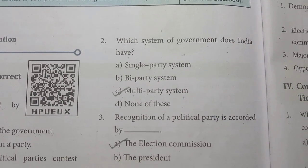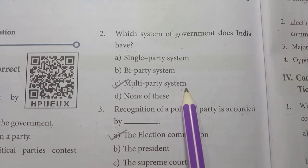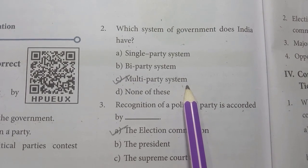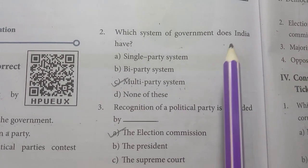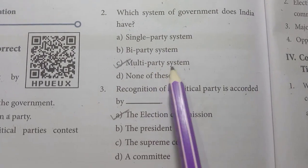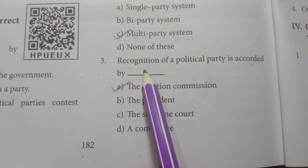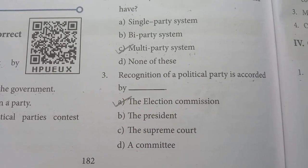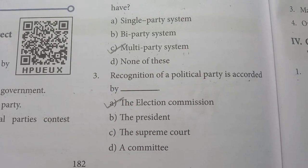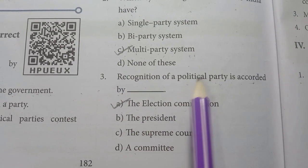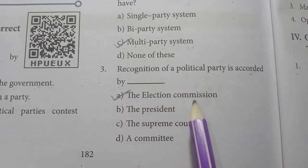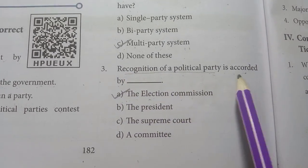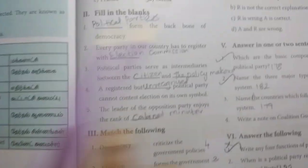Question 3: Multi-party system. The answer is multi-party system. So India follows a multi-party system. Question: recognition of a political party is accorded by the Election Commission. The answer is the Election Commission.